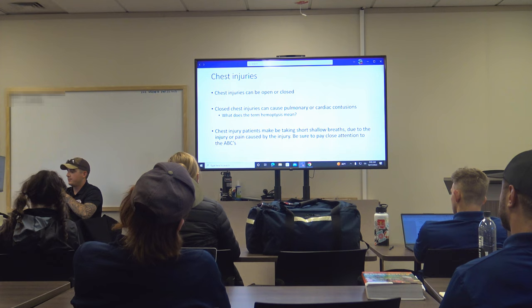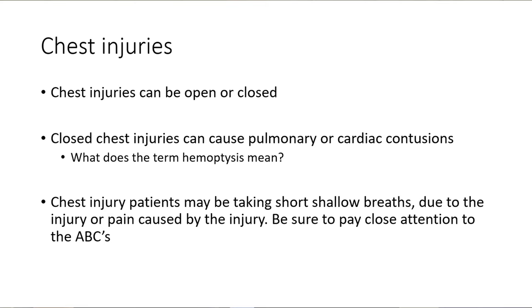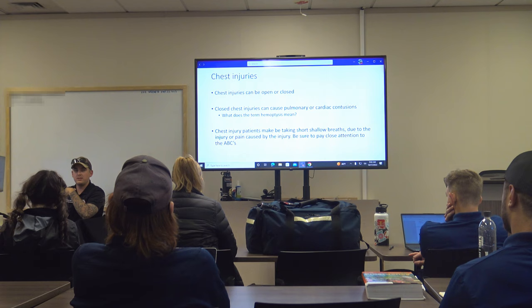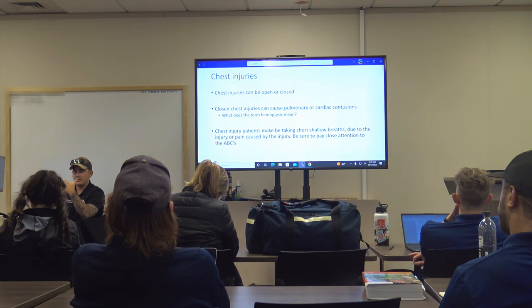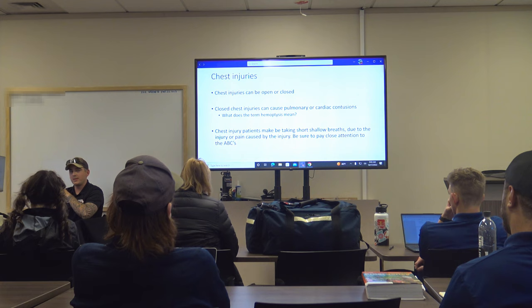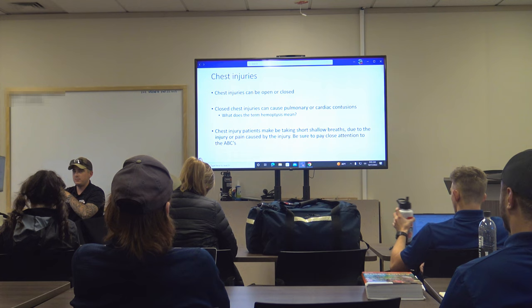Chest injury patients may take short, shallow breaths due to injury or pain. Pay close attention to their ABCs. With a rib injury, tidal volume decreases and reserve volume is reduced, making them more susceptible to desaturation. Re-listen to lung sounds, reassess ABCs, and give high-flow oxygen. Be more aggressive if they're taking really short shallow breaths, as they're more prone to decompensation.